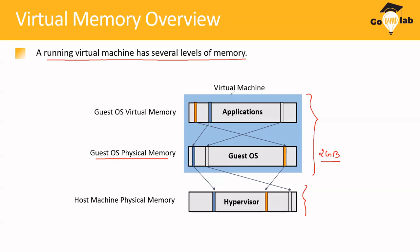When you install or instantiate any application inside the VM, the application also requires memory, because the application is the one consuming memory pages from the guest OS memory. The memory consumed by the application running inside your virtual machine is called guest operating system virtual memory.